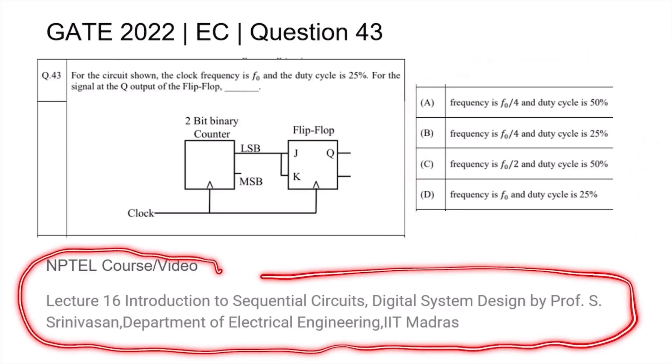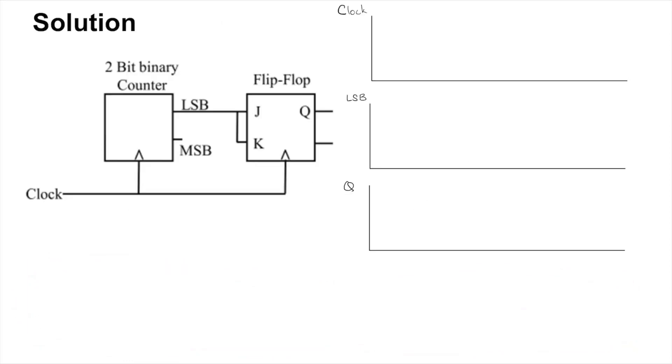So you have a clock with frequency F0 being fed to a binary counter and JK flip-flop. What will happen? Let us look at the clock waveform.